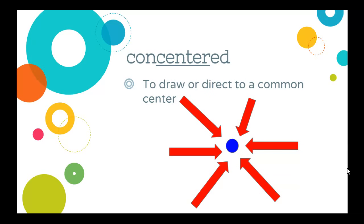Next is 'concentre,' which means to draw or direct attention to a common center. These arrows concentre around the blue circle. You can also think of it this way: 'I need to concentre my thoughts so I can focus' — to draw or direct your thoughts to a common center. Or: 'The hotels were concentred around the amusement park' — they all drew or directed attention to the amusement park in the middle.